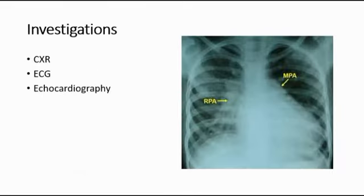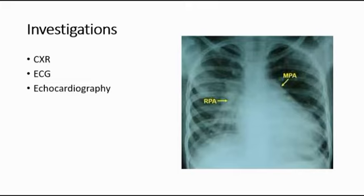For investigations, we can do a chest X-ray. It looks normal for small VSD. For large VSD, we can see cardiomegaly, large pulmonary arteries, and also plethoric lung fields. For ECG in large VSD, we can see left ventricular hypertrophy or biventricular hypertrophy signs. We can also do echocardiography to see the anatomy of the defect and to assess the hemodynamic effects using Doppler.